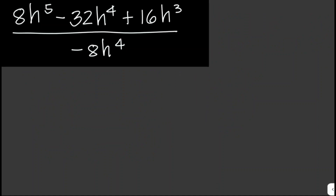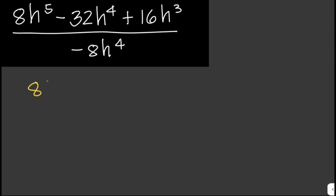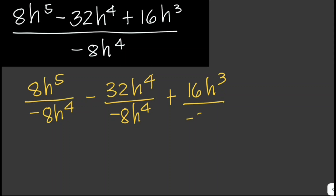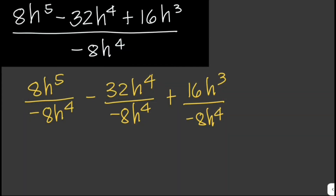Let's try another one. This would be 8h⁵ over negative 8h⁴, minus 32h⁴ over negative 8h⁴, plus 16h³ over negative 8h⁴.